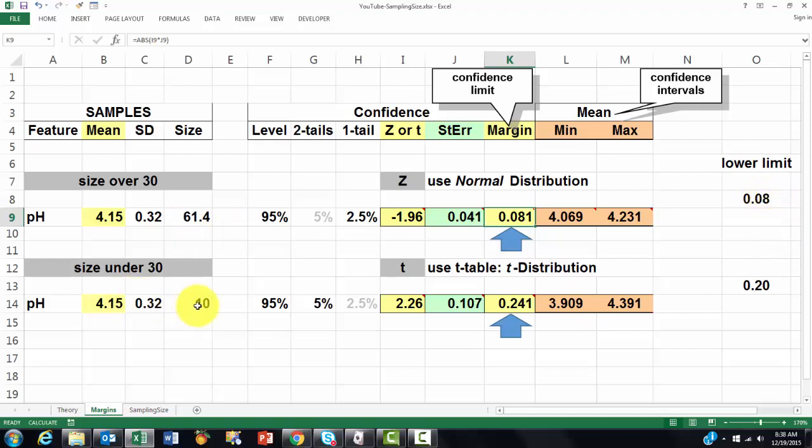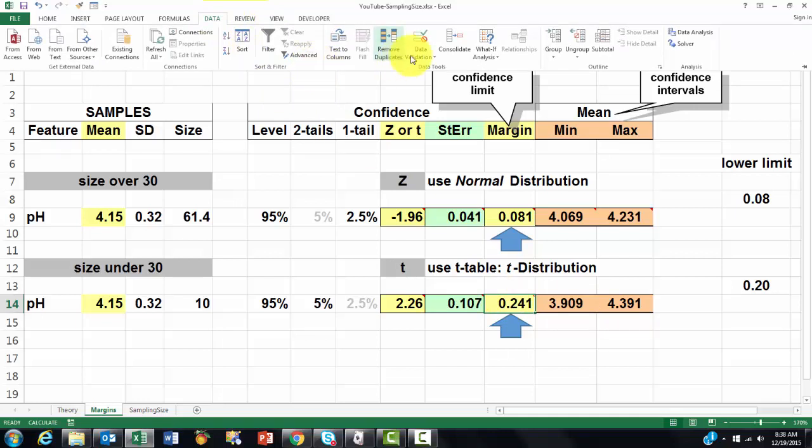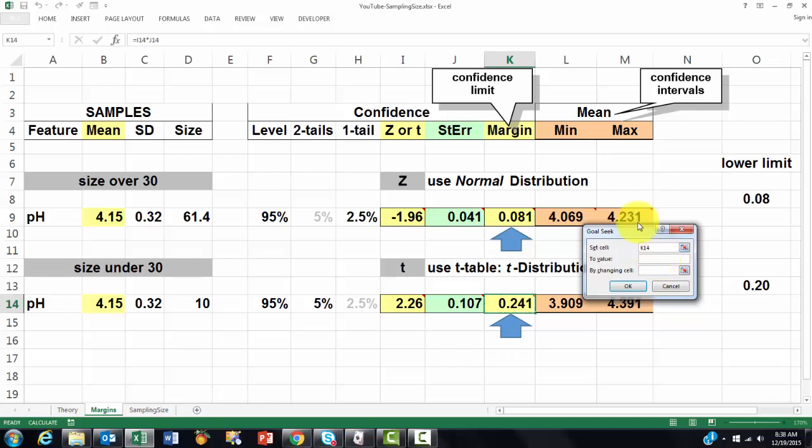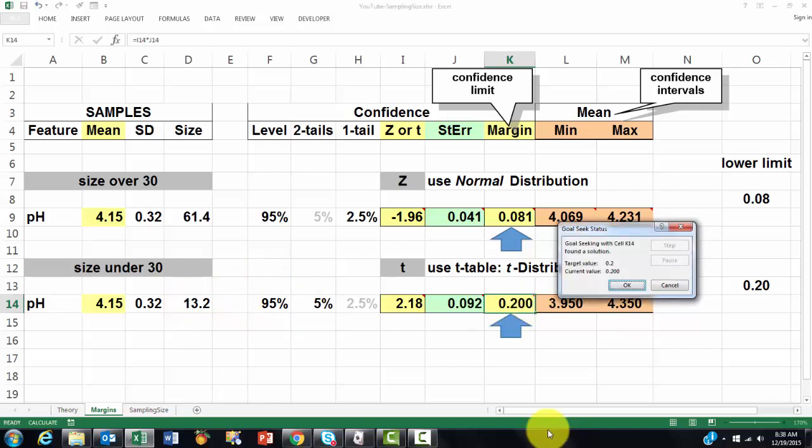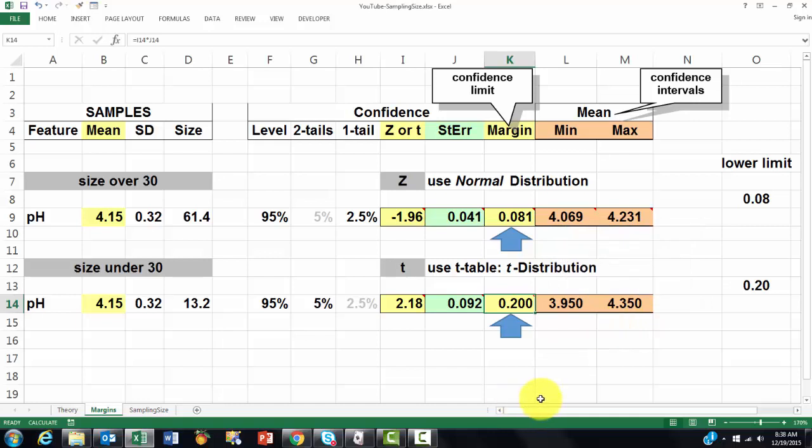I'm going to do something similar here. How many cases would I need if I want to lower the limit to 0.2 instead of 0.241? So we are going to do a Goal Seek performance on that cell. Goal Seek, What-If Analysis, Goal Seek. Set that one to 0.2, to a specific value, by changing again the size of the sample. And the machine came up with 14 cases you would need in your sample. That takes more time and more money of your budget, but that's the price you have to pay.